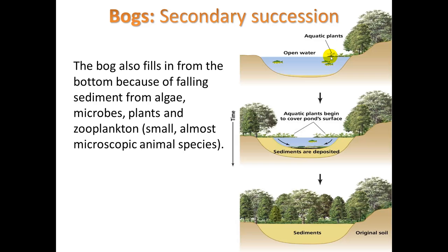The bog is also filling in from the bottom. As you have more growth along the top in the form of algae, microbes, plants, and zooplankton — small, almost microscopic animal species — you get sediment. As they die, their organic matter sinks and builds up over time until eventually the overlying growth and the sediment from that decaying growth fill up the bog. We have a succession where we went from having a large pond to soil with new trees on top. If you didn't have a trained eye, you might not even know there was ever a bog there in the first place.